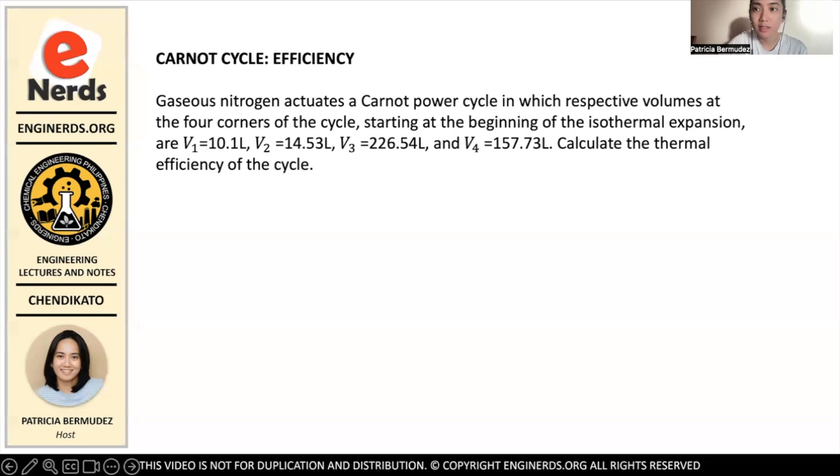So the problem states that gaseous nitrogen actuates a Carnot power cycle in which respective volumes at the four corners of the cycle, starting at the beginning of the isothermal expansion, are V1 = 10.1 liters, V2 = 14.63 liters, V3 = 226.54 liters, and V4 = 157.73 liters. Calculate the thermal efficiency of the cycle.